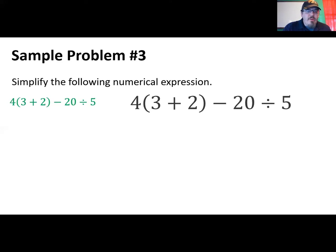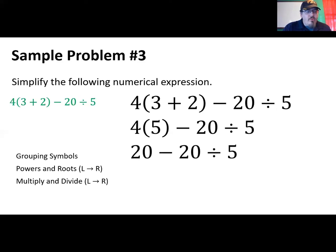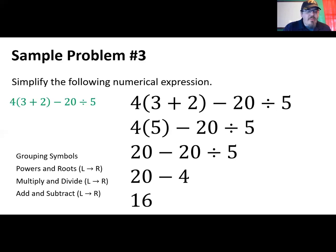Let's do one final example. We simplify the expression by rewriting it first. We start with grouping symbols — there are parentheses containing 3 plus 2, which simplifies to 5. There are no powers or roots, so we skip that step. We take care of multiplication and division from left to right: 4 times 5 is 20, then 20 divided by 5 is 4. That leaves 20 minus 4. Addition and subtraction is done next — only subtraction here — giving us an answer of 16.